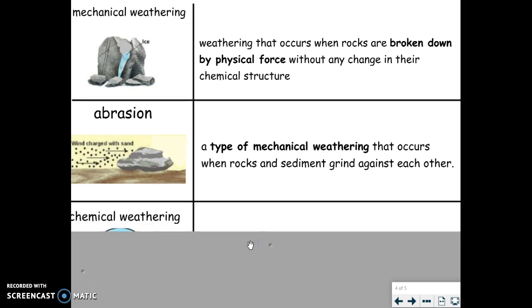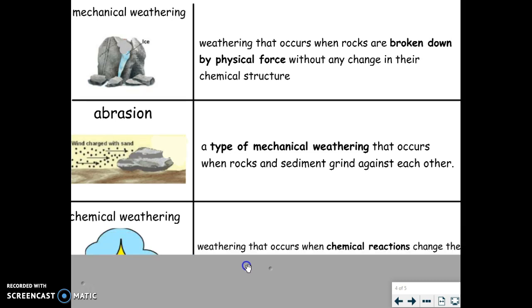Chemical weathering: weathering that occurs when chemical reactions change the composition of rocks, rearranging the atoms or molecules into new substances with different properties. Chemical weathering, like a chemical reaction, means that matter is being rearranged. In chemical weathering, you are ending up with a new substance which may contain very different properties from the original.